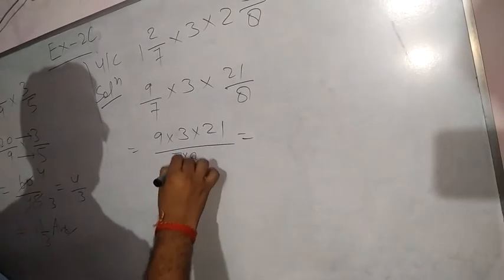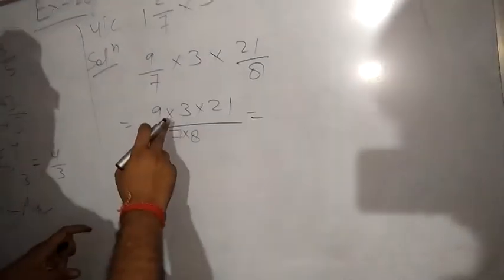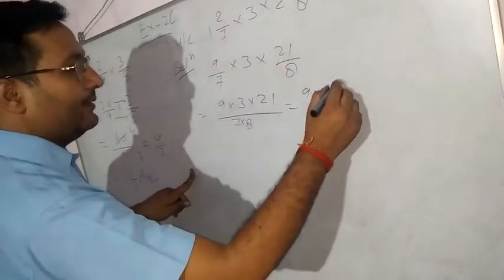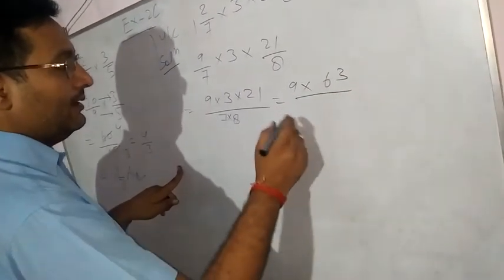So what we can write? This 9 and 3 × 2, that means 63 by 56.